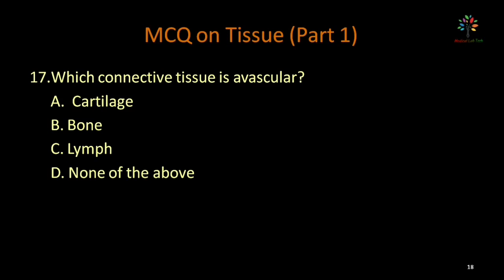Which connective tissue is avascular — meaning it does not contain blood vessels? Options: cartilage, bone, lymph, none of the above. Cartilage is the connective tissue that is avascular. Bone, by contrast, is highly vascular connective tissue. Correct option is cartilage.